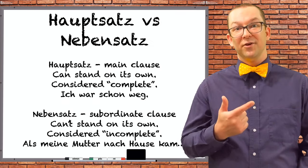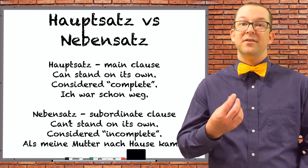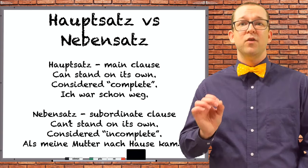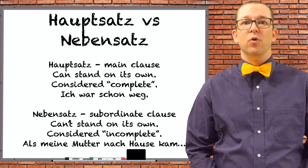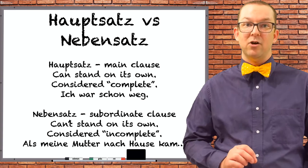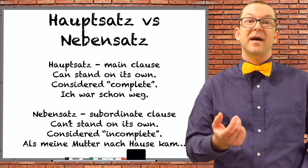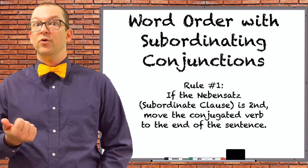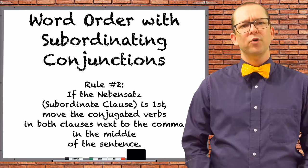There are two types of clauses to concern ourselves with: Hauptsatz and Nebensatz. Hauptsatz refers to the clause that could stand on its own — the main clause. In our first example, this is 'Ich war schon weg.' If the main clause is first, the word order is normal in that clause. The second type of clause starts with the subordinating conjunction — the Nebensatz, or subordinate clause. This clause will always have the conjugated verb at the end. All you do is take the verb from its normal spot next to the subject and put it at the end of the clause. This is why 'kam' is at the end of 'als meine Mutter nach Hause kam.'